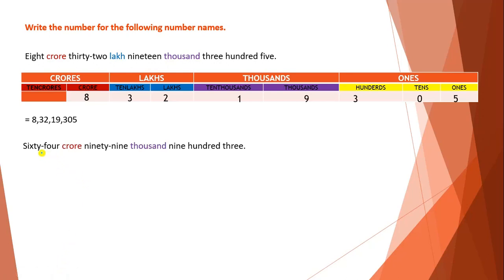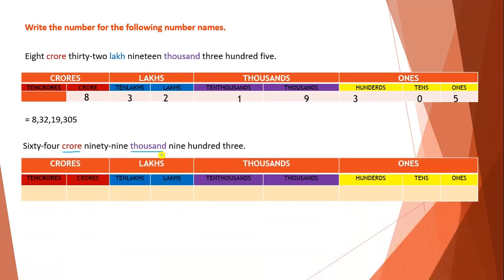In the next problem they are given a number in word form: 64 crore 99903. First we'll underline the periods — they are given the Crore period, the Thousands period, and the Ones period. Once we have done the underlining of the periods, the next step is to draw the place value chart table. Here I have drawn the place value chart table with periods: Ones, Thousands, Lakhs, Crore.